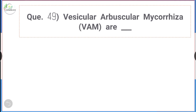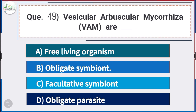Question number 49: Vesicular arbuscular mycorrhiza are — answer option B — obligate symbiont. Vesicular arbuscular mycorrhiza are obligate symbionts.